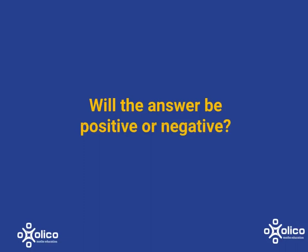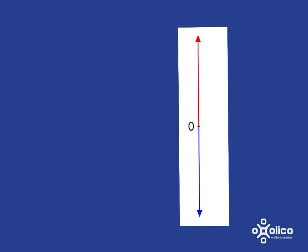We're going to play around with seeing whether a calculation is likely to end up as a positive or negative answer. This is a useful practice — before doing all the calculations, let's just figure out whether we'll end up with a positive or negative result. Let's look at 653 subtract 789. We don't want to do the calculation; just say is it positive or negative? If we went down 653 we'd end at 0, but we want to go down 789, which is going down even more, so we'll definitely end up in the negative.